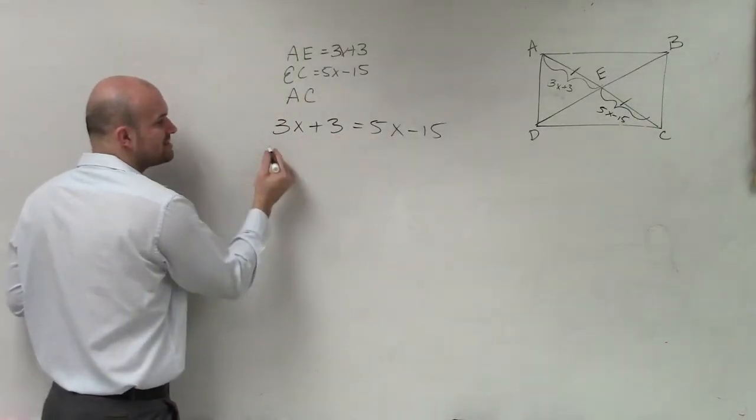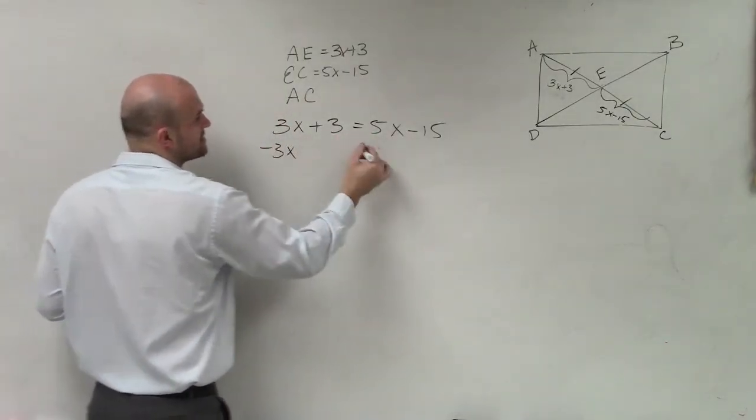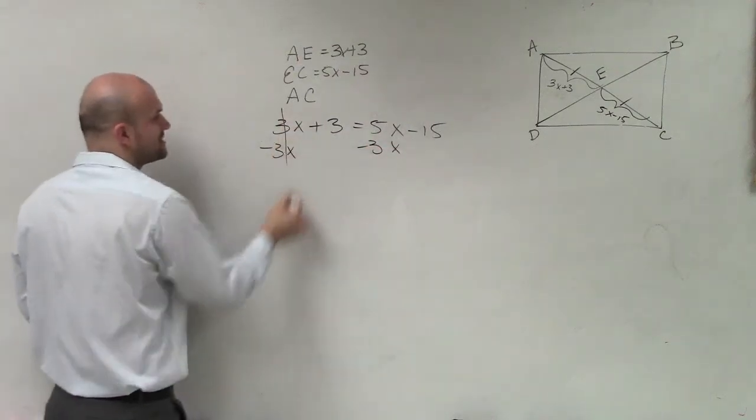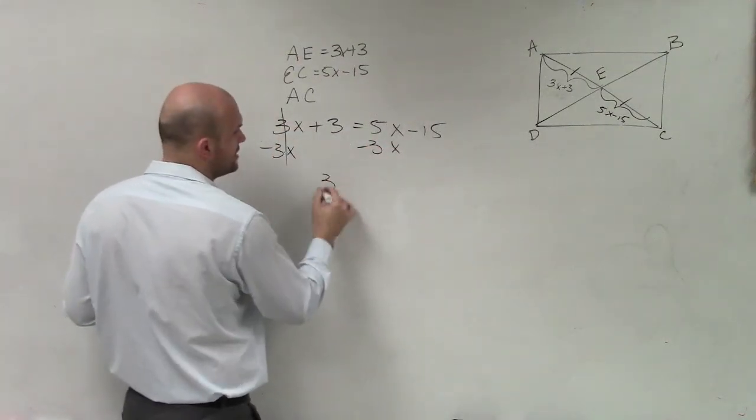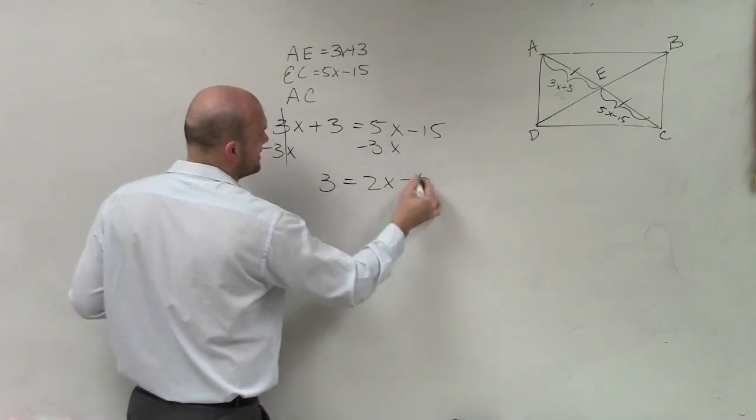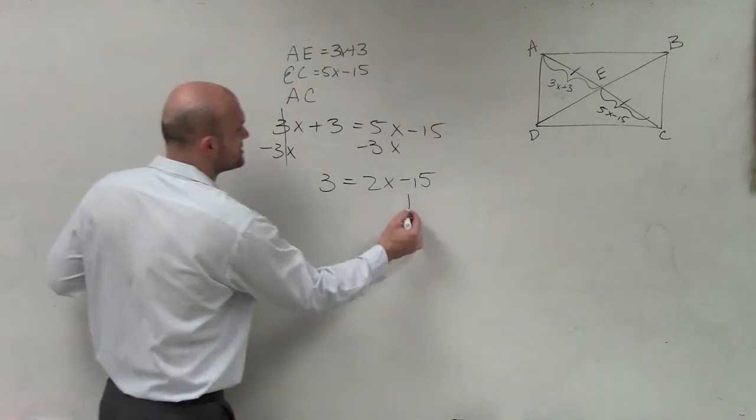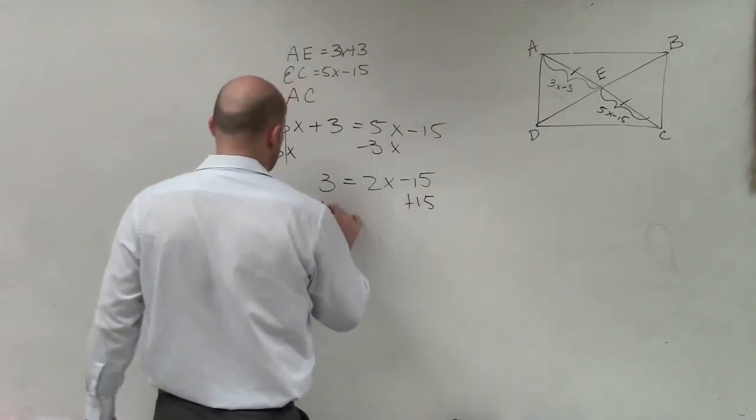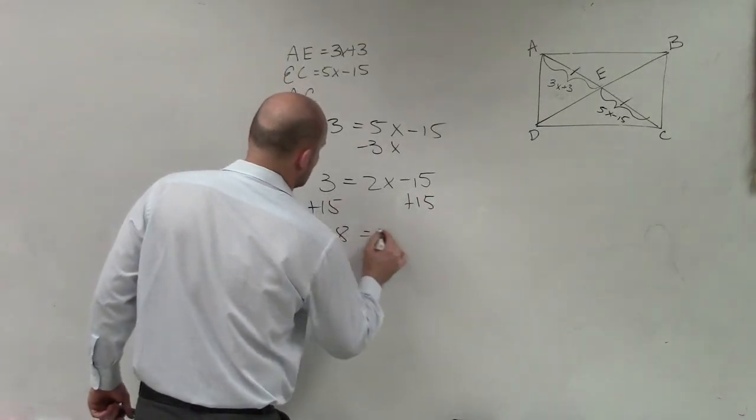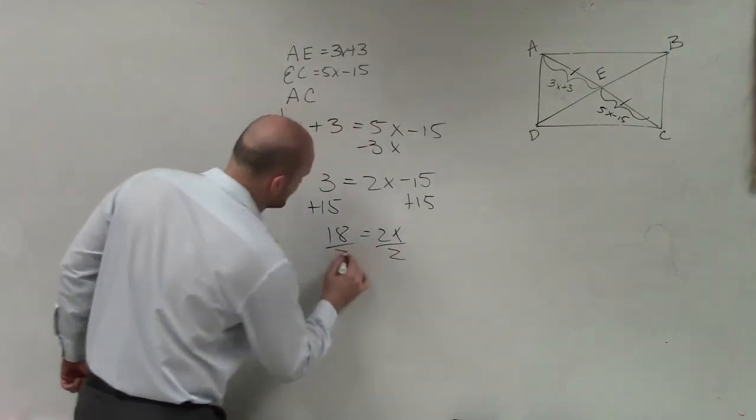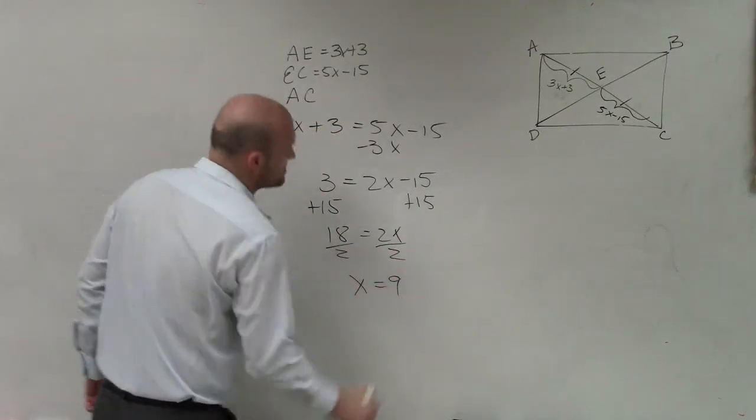So now what I need to do is solve. Notice I have a variable on both sides, so I need to get the variable to the same side. I'll subtract the 3x on both sides by using the subtraction property of equality. Now I have 3 equals 2x minus 15. Now I have a two-step equation that I solved by adding 15 to both sides. I have 18 equals 2x. Divide by 2, divide by 2. x equals 9.